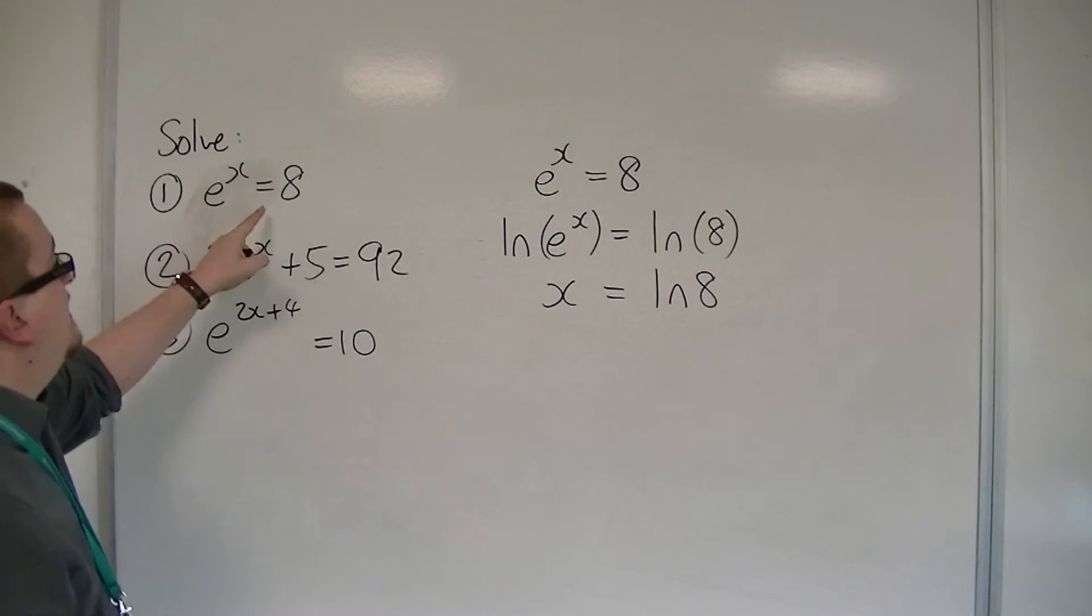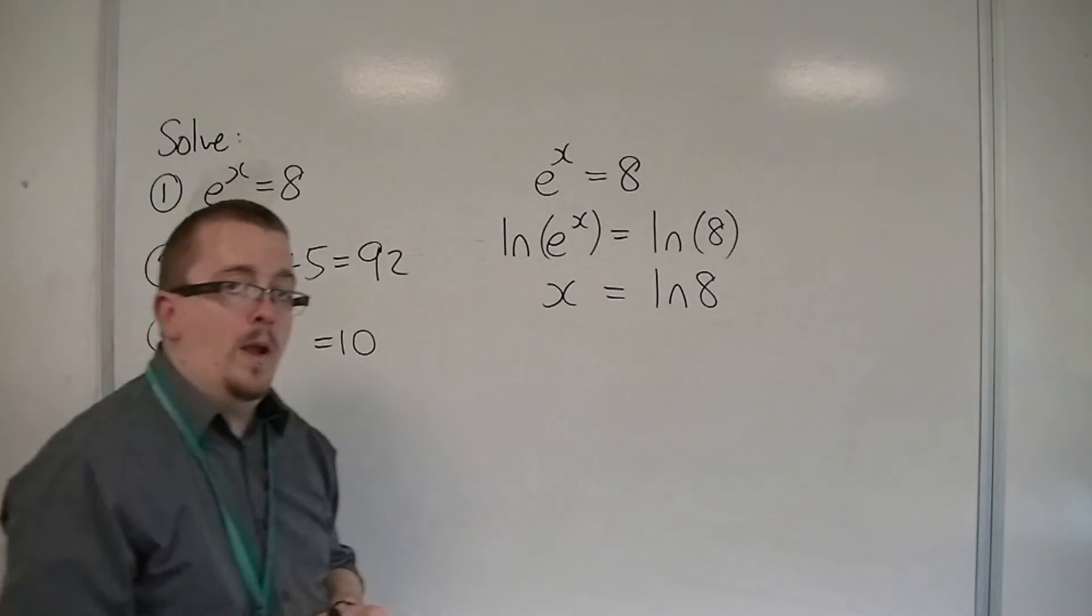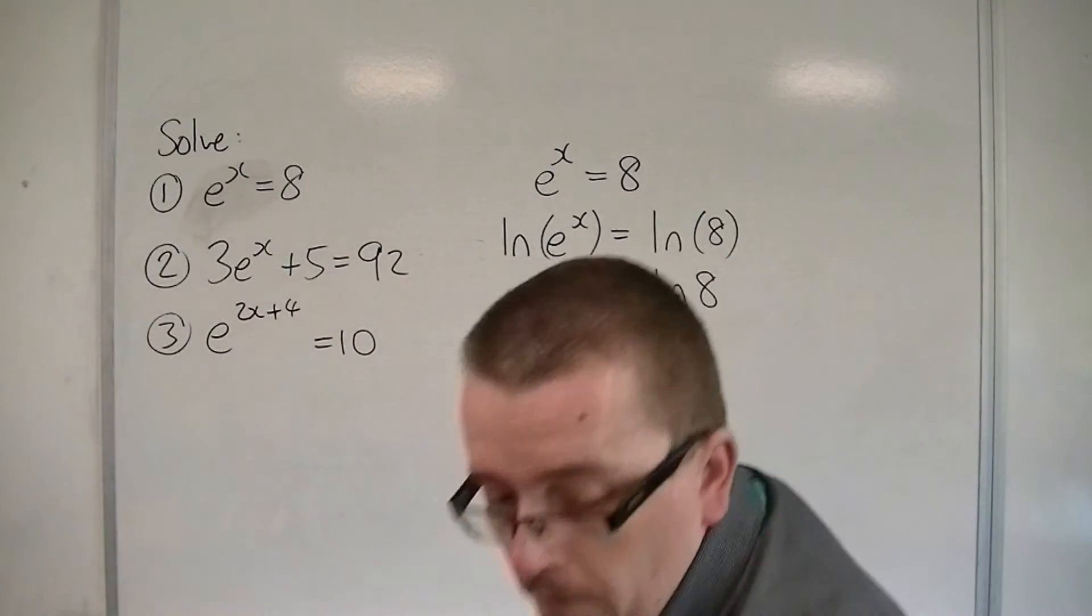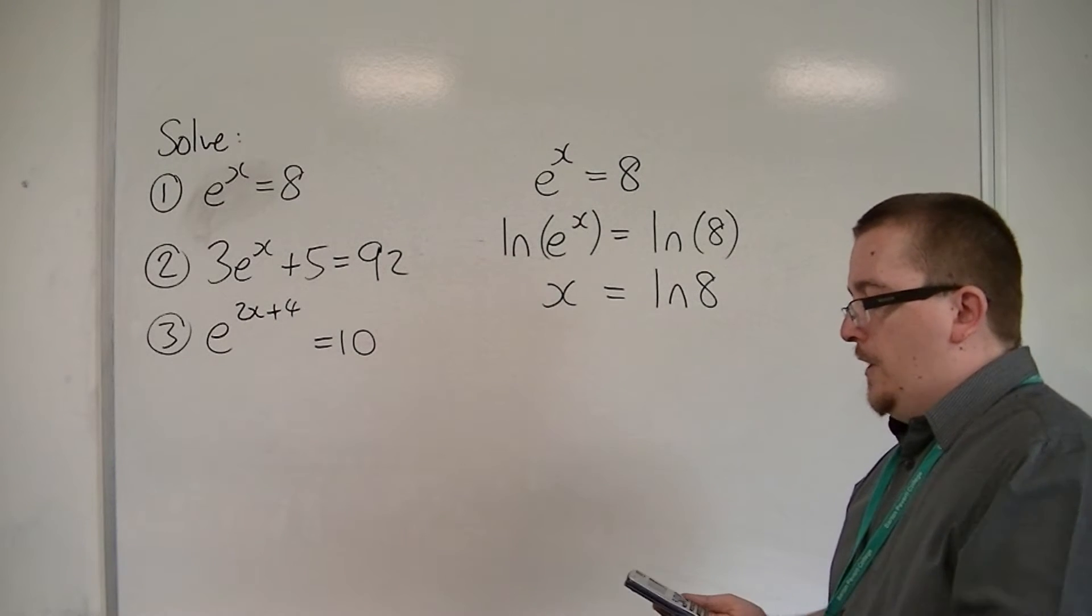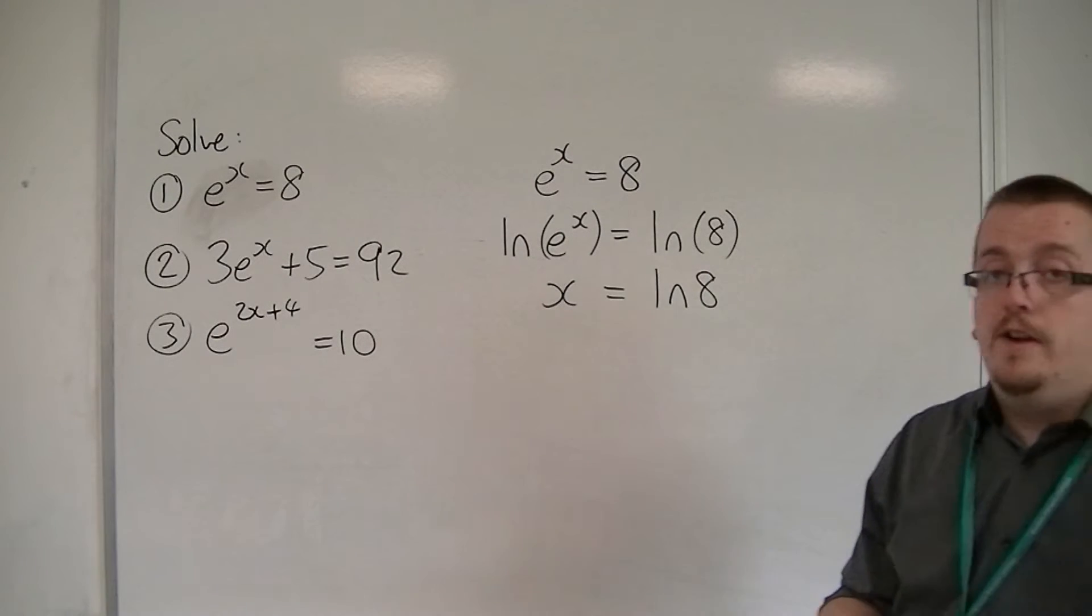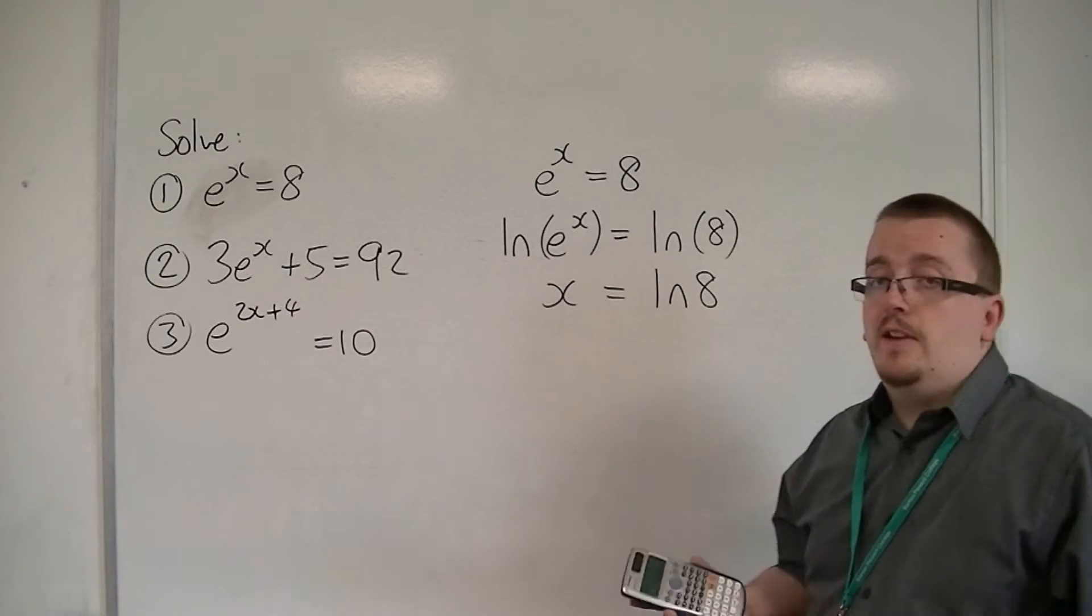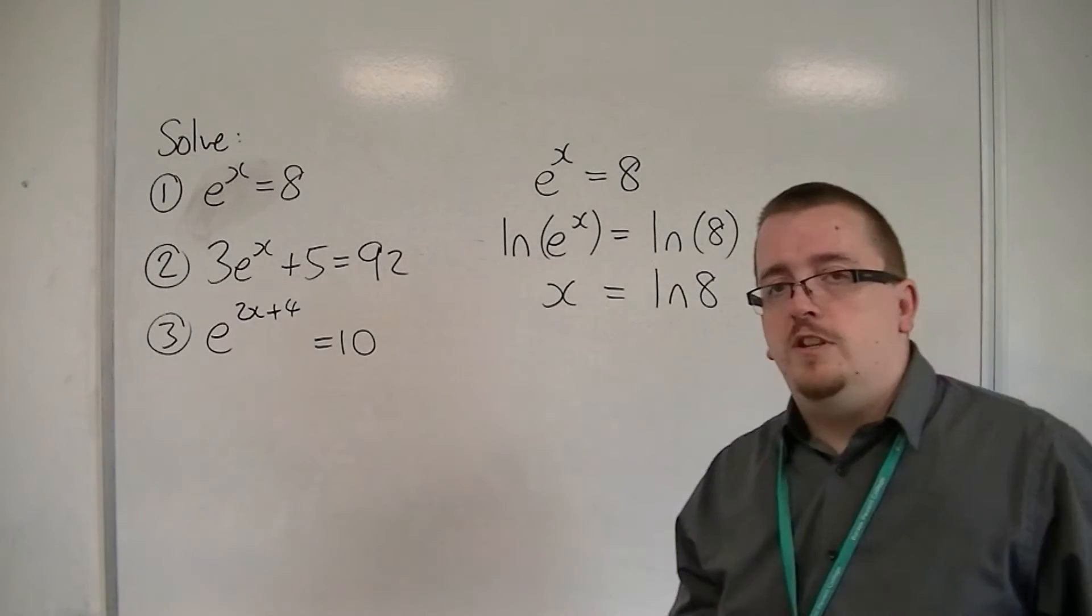And that is the exact answer to that question. So if you want a decimal approximation, then you'd be looking at 2.079 to 3 decimal places. But we want the exact answer in the majority of cases.